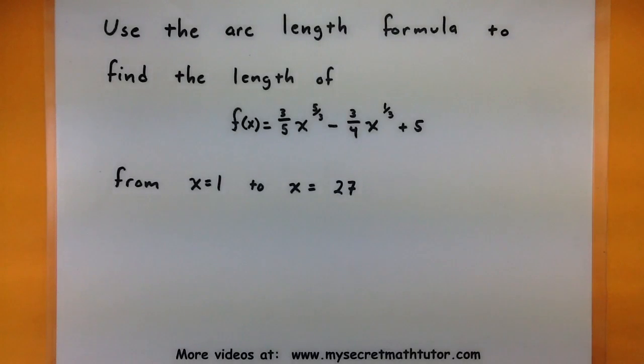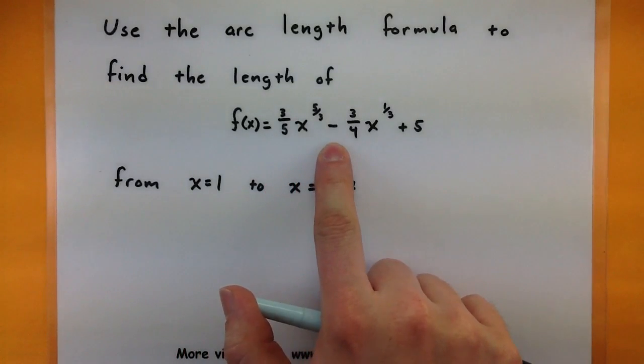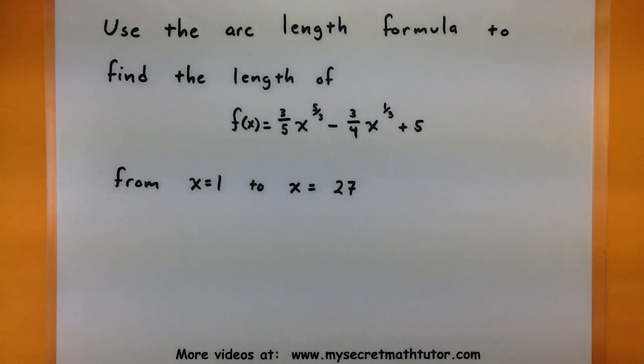One of the most useful formulas you come across in calculus is probably the one that figures out the arc length of a curve. And in this example, that's exactly what we're going to do. We're going to use that formula to figure out the length of the following function: 3 fifths x to the 5 thirds minus 3 fourths x to the 1 third plus 5, and we're going to take it from x equals 1 all the way up to 27.